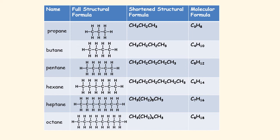The shortened structural formula is worked out by looking at each carbon in the chain. For propane, the first carbon has three hydrogens — CH₃; the middle carbon has two hydrogens — CH₂; and the final one is CH₃. For pentane: CH₃, then CH₂, CH₂, CH₂, then CH₃. Once you have lots of CH₂ groups, you can simplify: for octane, it's written as CH₃(CH₂)₆CH₃ — the bracketed six tells us there are six CH₂ groups in a row.